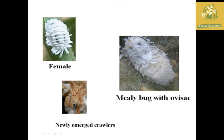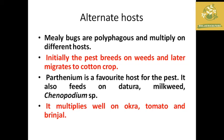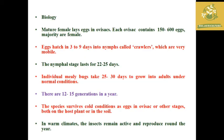Alternative hosts of mealybugs include parthenium weed, okra, brinjal and tomato. Mealybug is a polyphagous pest that can multiply on different hosts and weeds, migrating to cotton once cultivation begins. They have around 12 to 15 generations per year and can survive under cold conditions as eggs in ovisacs or in other stages on the host plant or in the soil.